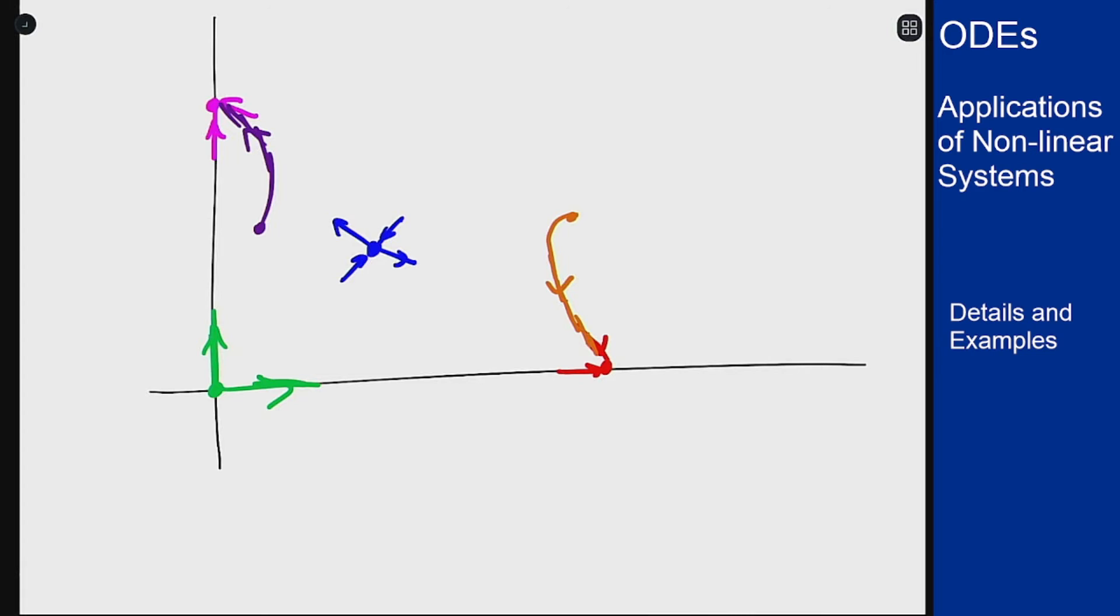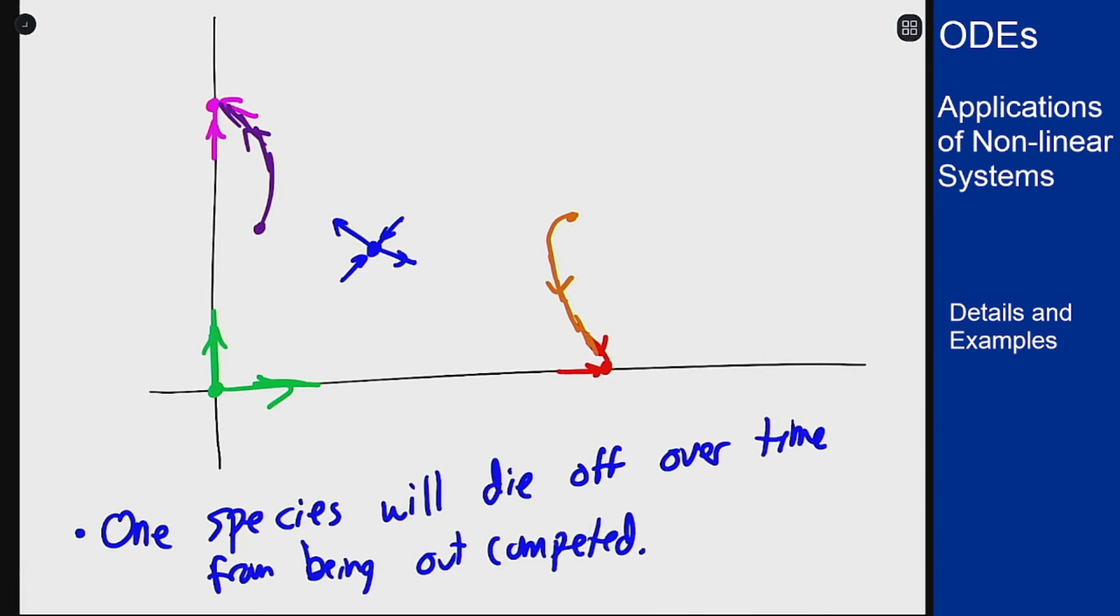So we can determine from this basically we have a saddle in the middle and the sinks on the outsides is that over time one of these populations will die off because the other one will out compete it for the resources. Now which one dies off depends on the initial condition.